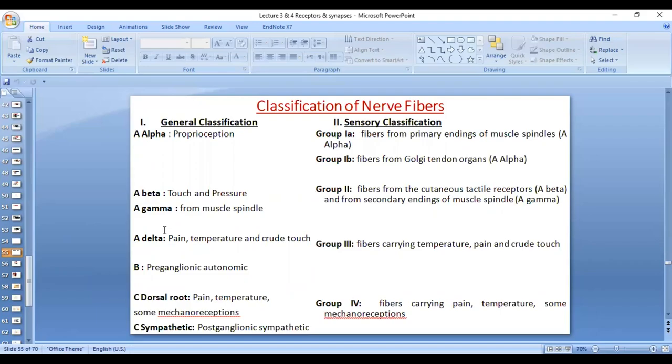Now the fastest is A-alpha. As you go to our C fibers, the fibers, they become slower. So the slowest is C fibers. The largest diameter is of A-alpha. Why? Because they are the fastest. Smallest diameter is of C fibers. C fibers are unmyelinated and that's why they are very slow. Whereas A-alpha, they are myelinated along with all A-beta, A-gamma and A-delta. So this is the classification.